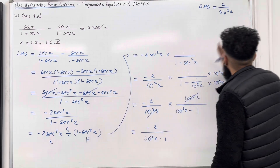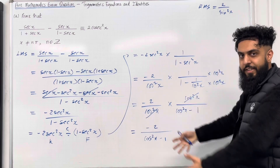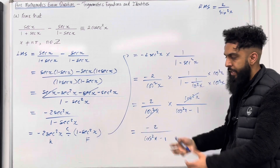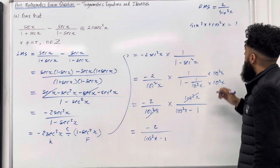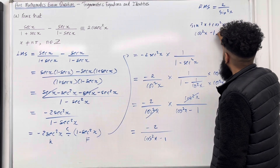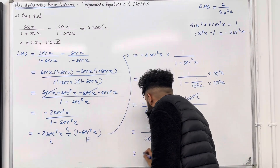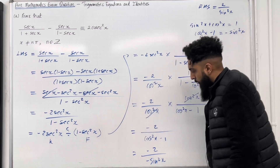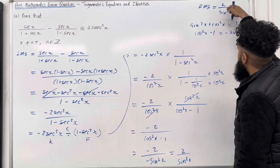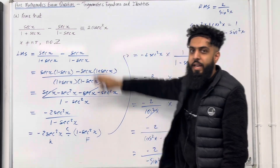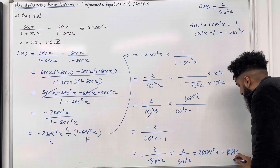So how do we go from minus 2 over cos squared x minus 1 to the right hand side, 2 over sin squared x? We've got cos squared x minus 1 in the denominator. We can apply an identity to rewrite this in terms of sin. We know that sin squared x plus cos squared x equals 1, so cos squared x minus 1 equals minus sin squared x. Hence the denominator becomes minus sin squared x. The negatives cancel and we're left with 2 over sin squared x — which is precisely 2 cosec squared x, equal to the right hand side, as required. End of proof. That completes part A.